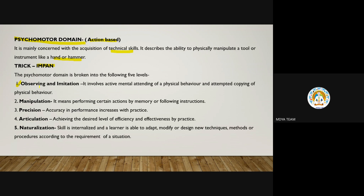First is imitation — to copy something. It involves active mental attending of a physical behavior and attempted copying of that physical behavior. For example, your mother is cooking food in the kitchen and you don't know how to cook. You are in the kitchen watching her, mentally attending to things. You are copying something from her behavior — if she is cutting vegetables and you are helping her, you are imitating your mother. This is observing and imitation.